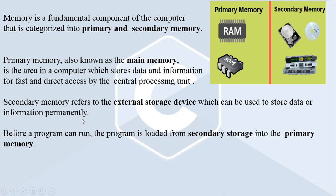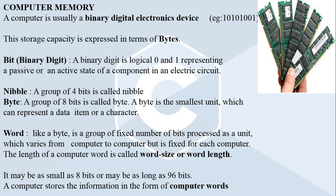In order to access data, it must first be loaded into primary memory, and then the CPU can access data or instructions directly in a faster manner. Before a program starts running, it is loaded from secondary storage into the primary memory, and then the central processing unit can directly and faster access the data. Also, the computer is a binary digital electronic device, meaning inside the computer memory, data is stored in binary format as a sequence of binary numbers.